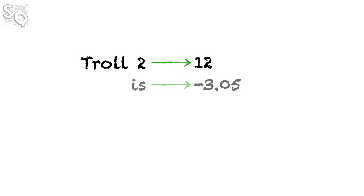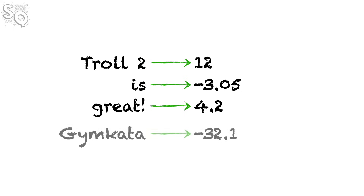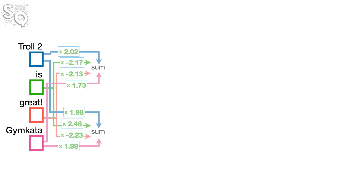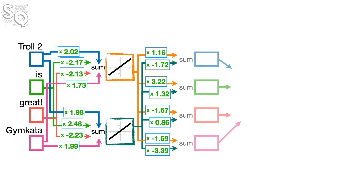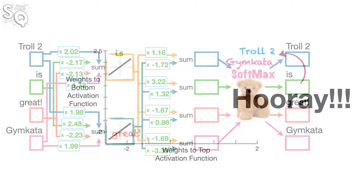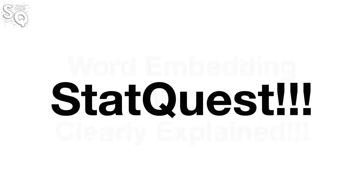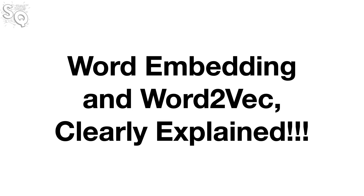If you want to turn words into numbers and you want those numbers to make sense, then use word embeddings — similar words will have similar numbers. I'm Josh Starmer and welcome to StatQuest. Today we're going to talk about Word Embedding and Word2Vec, and they're going to be clearly explained.